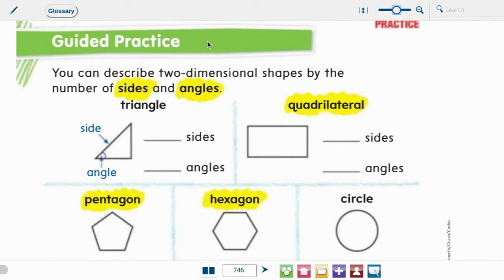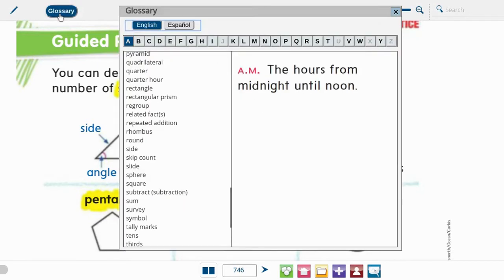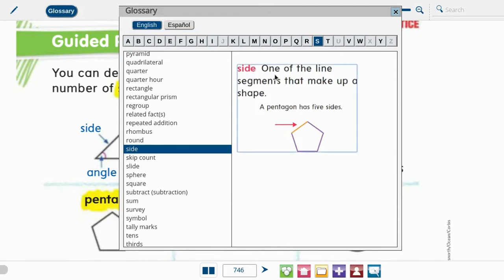Alright, sides and angles. Well, I'm not exactly sure what those two mean. Maybe I haven't practiced that enough. So I'm going to actually pull up my glossary real quick. Perfect. Side is right here. So side is one line segment, one of the line segments that make up a shape. A pentagon has five sides. A line segment means there's a beginning and an end and it's just one part of a shape.